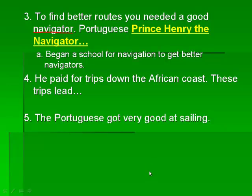Prince Henry set up these schools, and then he would pay for trips down the African coast. These were the first trips that get people started on exploration and finding new things, and it leads to what we call the Age of Discovery. That's where we're going to talk about Columbus and all that kind of good stuff. The Portuguese got very good at sailing because they had the best navigators.